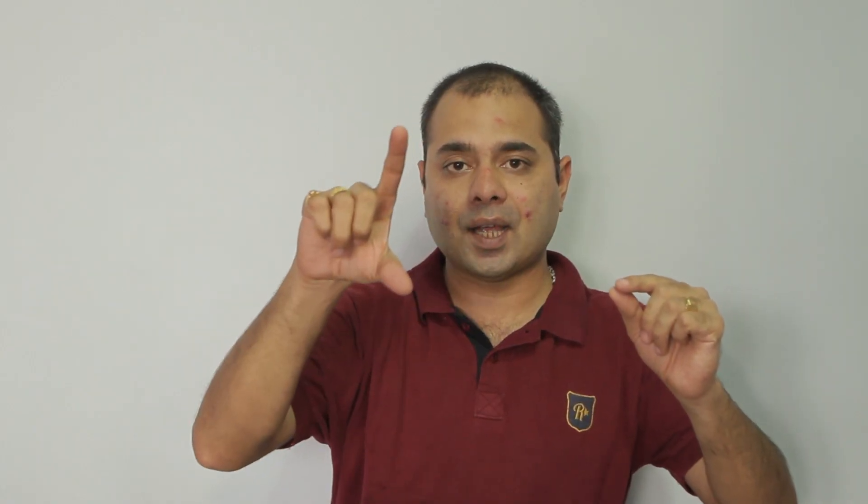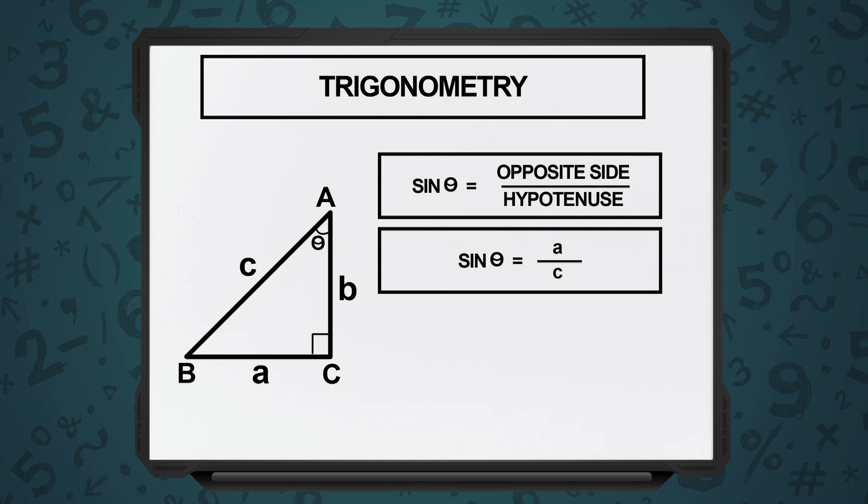Theta is opposite to the side with length A, B is the base, and C is the hypotenuse.